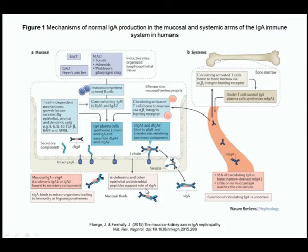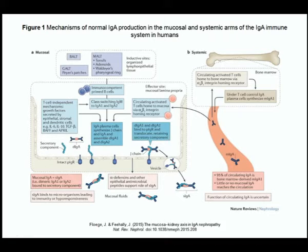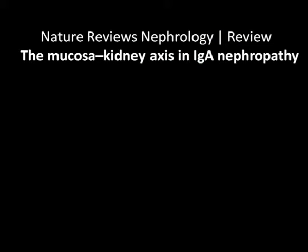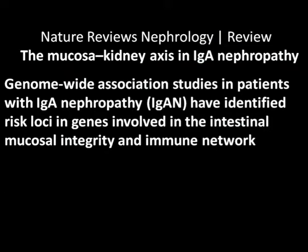This highlights the interesting link between the mucosal and systemic arms of the IgA system in humans. When dimeric IgA enters the circulation, galactose-deficient glycans lead to immune complex formation. Nature's Review Nephrology's mucosal-kidney axis in IgA nephropathy describes in various key concepts what is happening in the formation of IgA nephropathy.